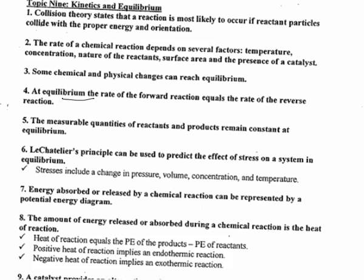Equilibrium is when the forward reaction and the reverse reaction occur at the same rate. It doesn't mean equal products and reactants. It just means that their concentration remains constant — they don't have to be equal to each other, just constant.